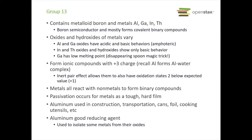All of the group 13 metals react with nonmetals to form binary ionic compounds. Passivation occurs with these metals and produces a tough, hard outer film. Aluminum has many uses — construction, transportation, cans, aluminum foil, cooking utensils. It's also a very good reducing agent and is used to isolate some metals from their oxides.